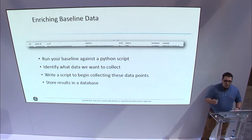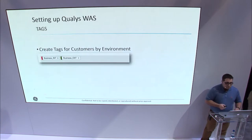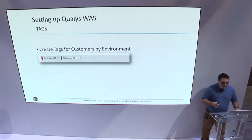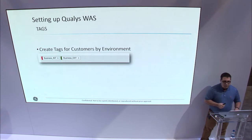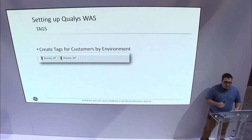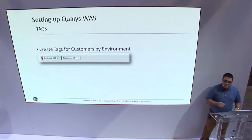The additional data that we're able to collect now provides answers to most of our questions. Now we can begin setting up Qualys WAAS, and the first thing we need to do is come up with our tagging strategy. We'll be able to segment access into Qualys, schedule our scans, create reports, and so on from these tags.